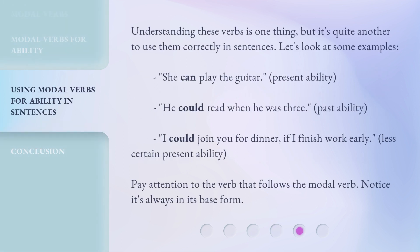Understanding these verbs is one thing, but it's quite another to use them correctly in sentences. Let's look at some examples. 'She can play the guitar' — present ability. 'He could read when he was three' — past ability. 'I could join you for dinner if I finish work early' — less certain present ability. Pay attention to the verb that follows the modal verb; notice it's always in its base form.